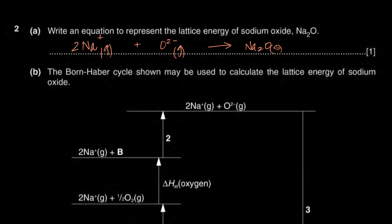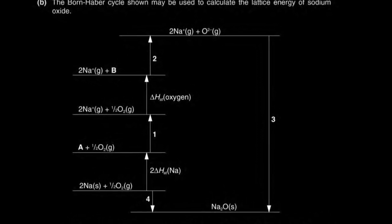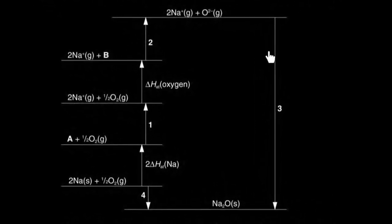Now in the Born-Haber cycle, they want you to focus on the cycle. They want you to identify species A and B, and also label the steps. So our job is to identify the states, the species, and steps one through four, and write them properly. The first question is: what is A and what is B?